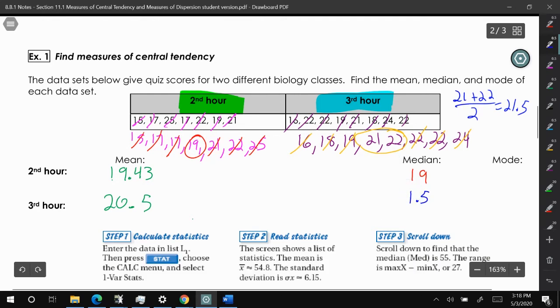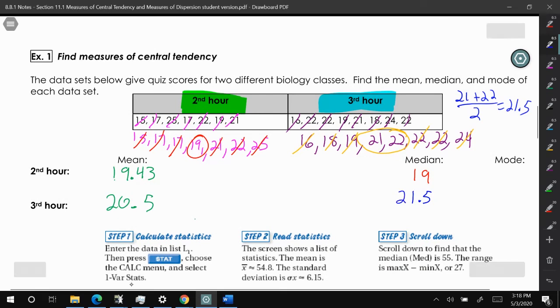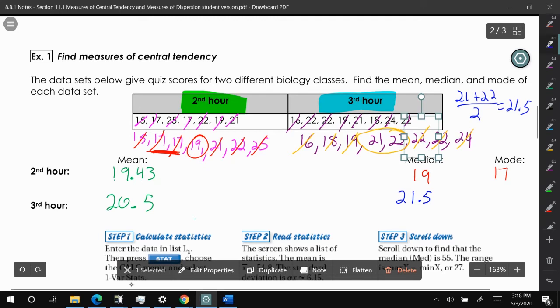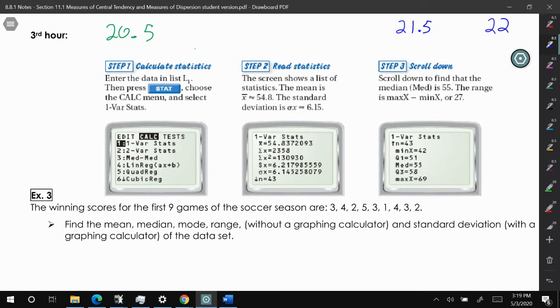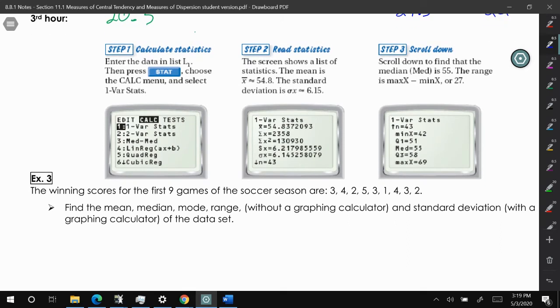And the mode is the number that occurs most. In second hour, our mode is 17. In third hour, our mode is 22. There is some way to get this information from your graphing calculator. These steps might seem familiar from when we calculated linear and quadratic regression equations. We're going to use this feature to do example number three.